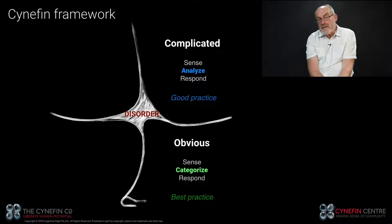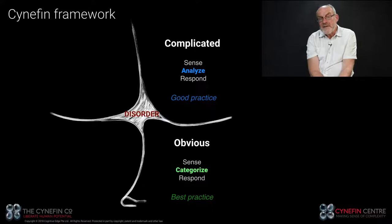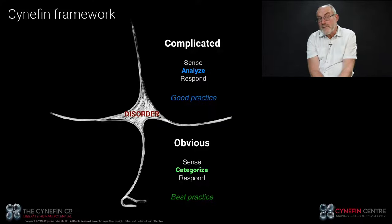The decision model in a complicated domain is sense, analyze, respond. I gather incoming data, analyze it, and that tells me what to do — or who to call in. Whereas in an obvious domain I can apply best practice as the one right way of doing things, in a complicated domain I apply good practice, with different variations depending somewhat on context. A major mistake organisations make is to impose best practice in a good practice domain.